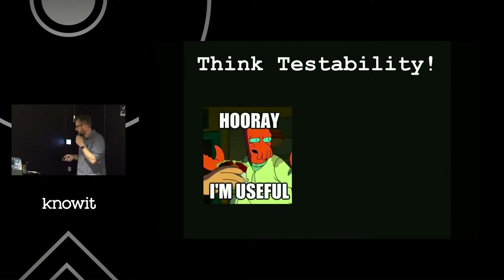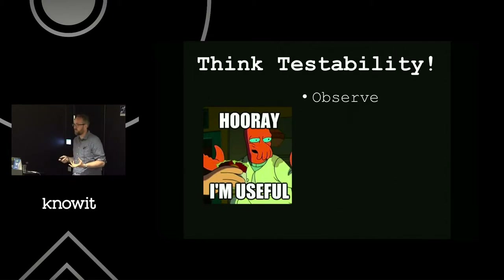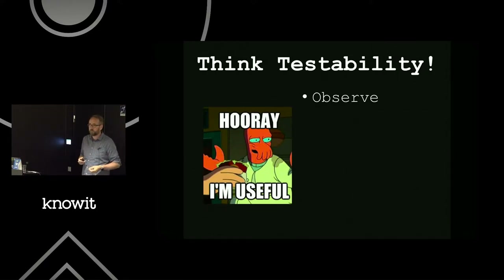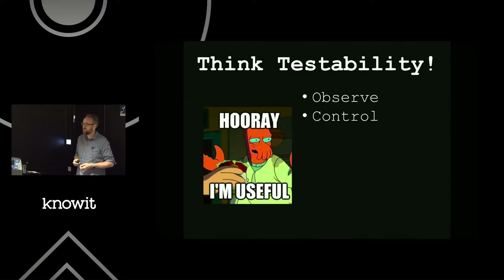Think testability. Observe: the ability to know what's going on — especially when you trigger some system action in testing, how do you know what's happening elsewhere? All our systems are now complex; we've gone way beyond complicated into complex. So when you trigger a particular condition in your system, how do you know what's happening? You need to be able to observe it — so logging, monitoring, alerting in all your environments. Control: if you can't control the system and set it into the state you need it to be, how effective can your testing be?